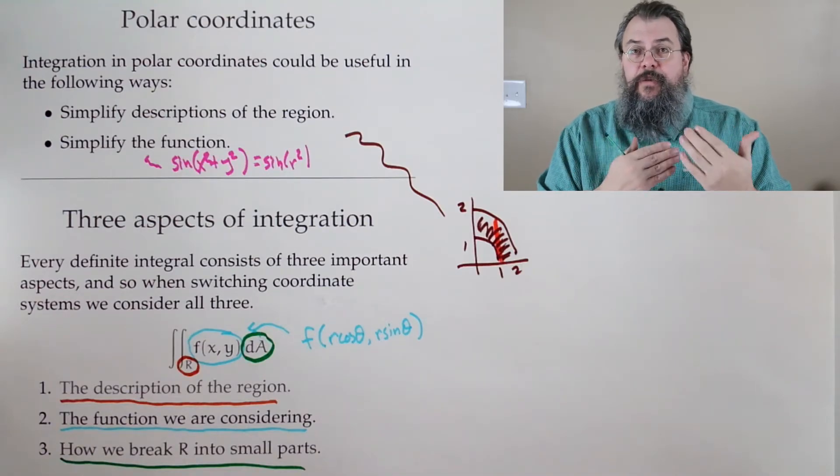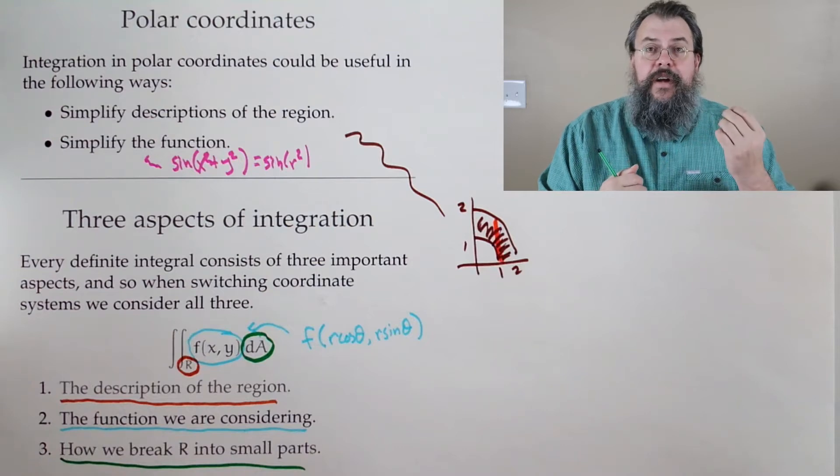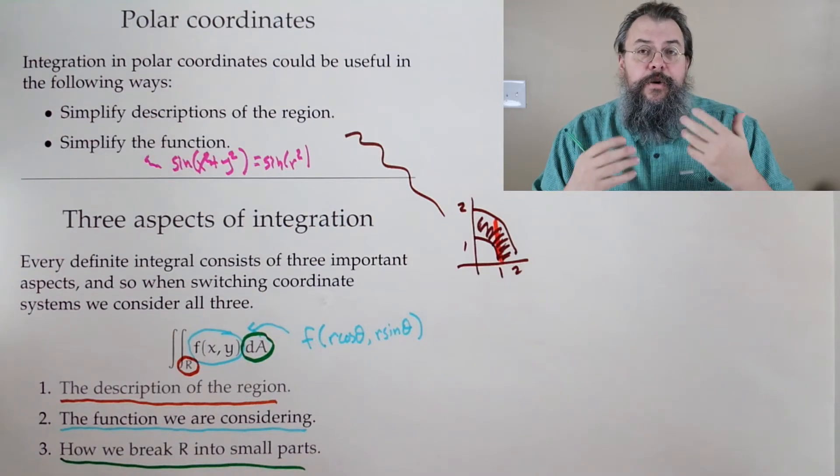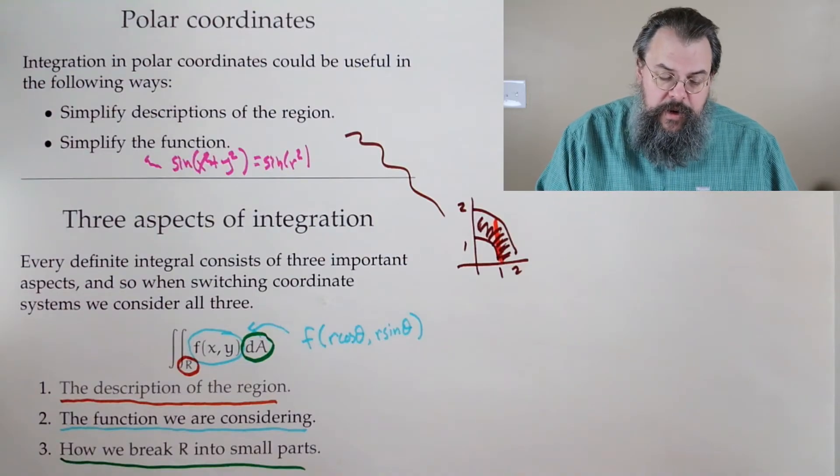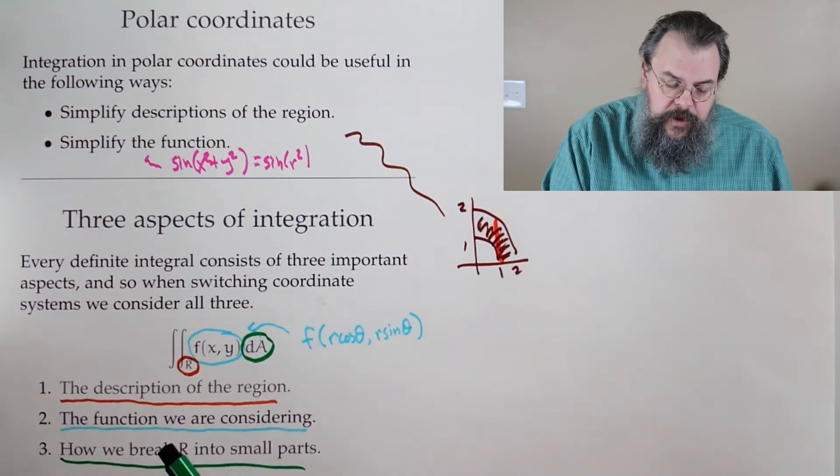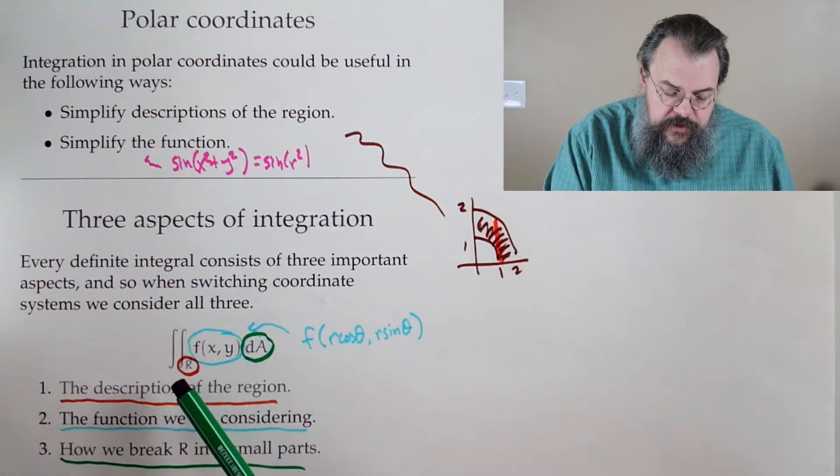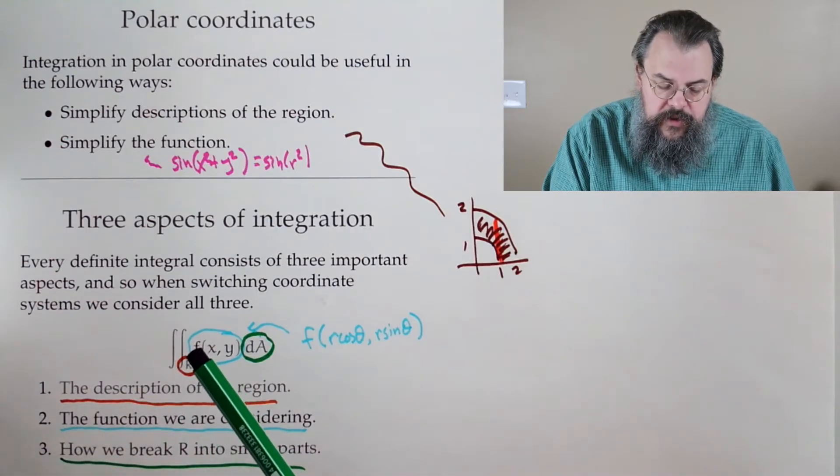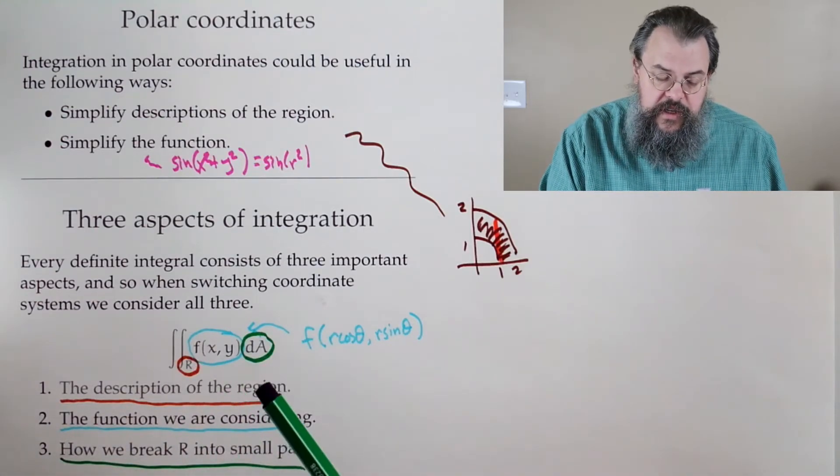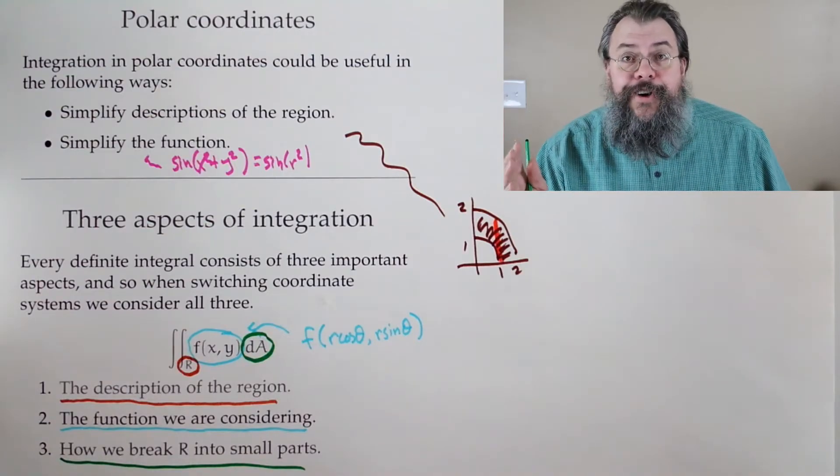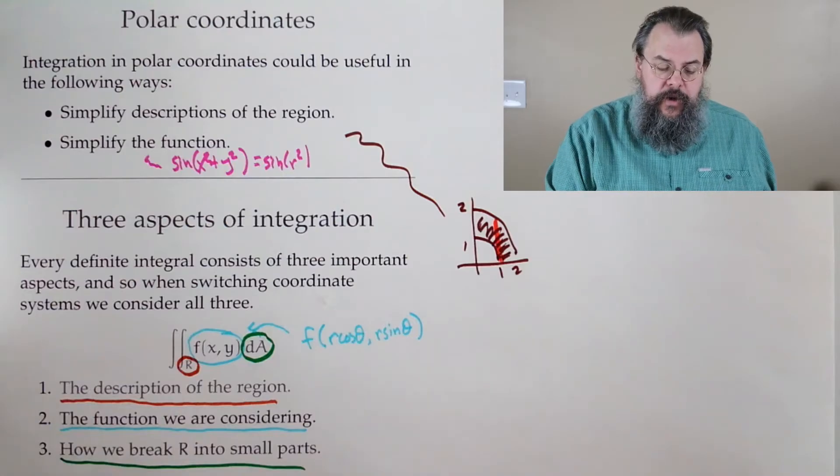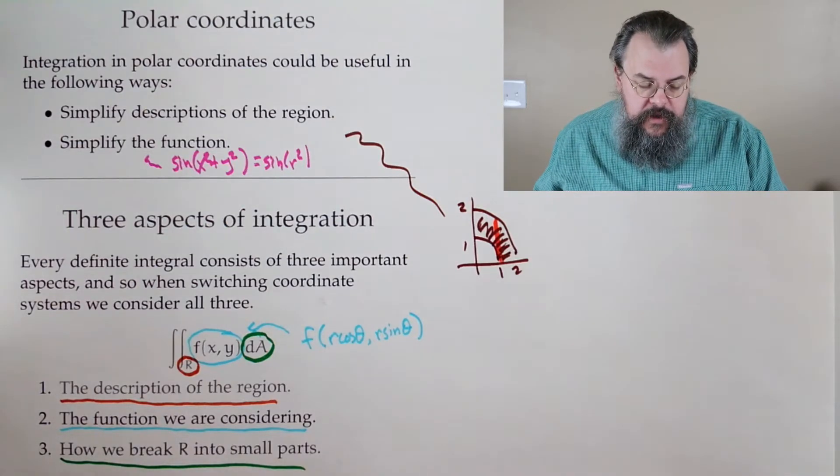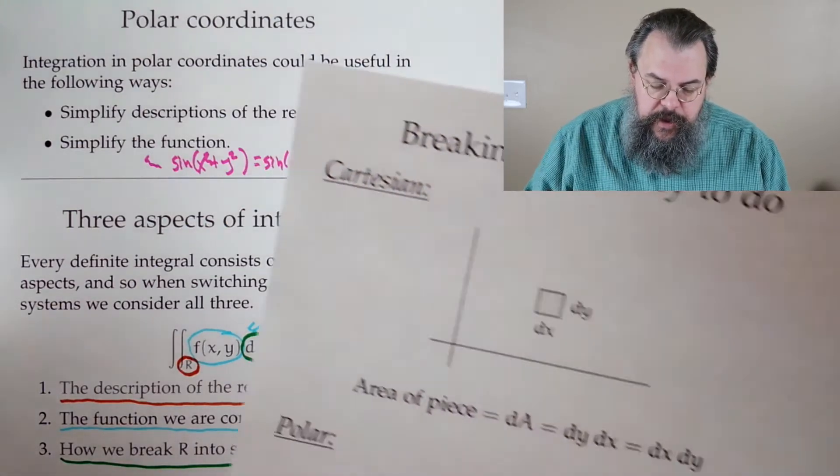If I'm changing into a different coordinate system, I've got to say, okay, now what do my small pieces look like? So among the three things, once you have all of them, what's the description of your region? What's the function in terms of r and theta? And how are you breaking things up? You're good to go. Life is wonderful and you can do your integral. So the last thing we really need to focus on is this third part.